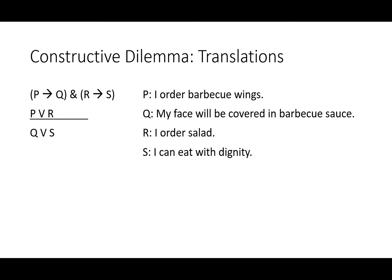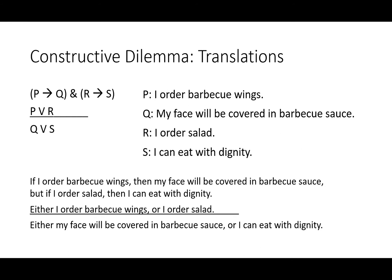Imagine you're going to a restaurant and you're trying to decide what to order. P: I order barbecue wings. Q: my face will be covered in barbecue sauce. R: I order salad. S: I can eat with dignity. That gives us: if I order barbecue wings, then my face will be covered in barbecue sauce. But if I order salad, then I can eat with dignity. Either I order barbecue wings or I order salad. So either my face will be covered in barbecue sauce, or I can eat with dignity. This argument doesn't tell me what to do, but it lays out the consequences of my possible decisions. If I'm at a business lunch or going on a date, I should consider the salad. If I'm eating alone, maybe I'll order the barbecue wings.